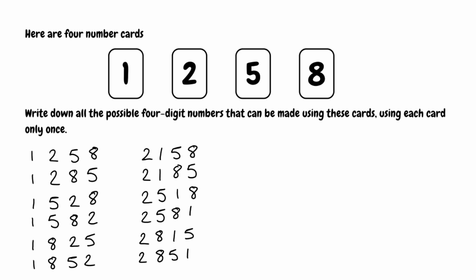We now move on to numbers with 5 as the first digit. In order of size: 5, 1, 2, 8. Keeping 5 and 1 the same and swapping the last two gives 5, 1, 8, 2. With 5 and 2 at the front, we get 5, 2, 1, 8, and swapping gives 5, 2, 8, 1.